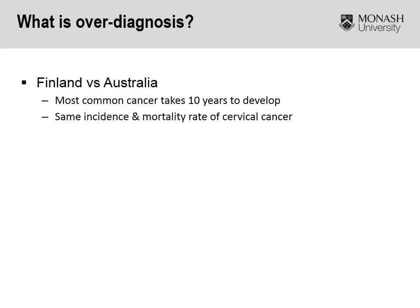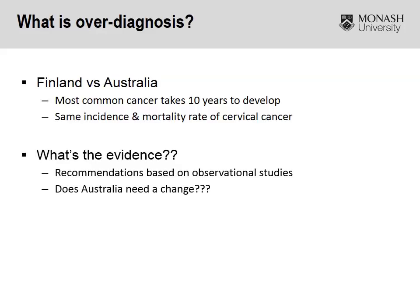So we were screening far more in Australia than in Finland. However, the most common cancer in this instance takes 10 years to develop, and the key finding was that regardless of screening potentially four times more frequently than Finland, there were the same incidence and mortality rates between the two countries.